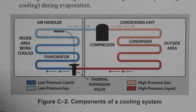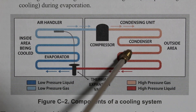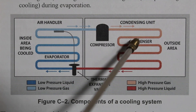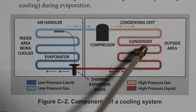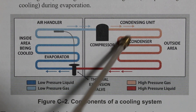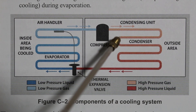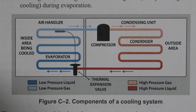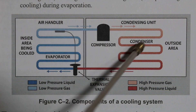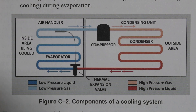Next we can move on to our second major component, and that is our condenser. Our condenser is a component where we reject heat. The most typical types of condensers are air cooled — nothing more than a copper coil with aluminum fins and a fan used to reject heat by blowing air across the condenser coil. There are also water cooled models available on the market.